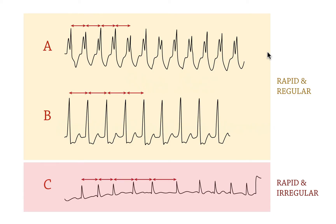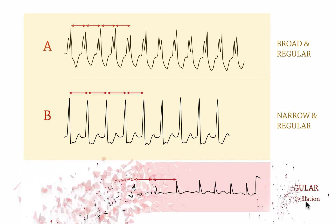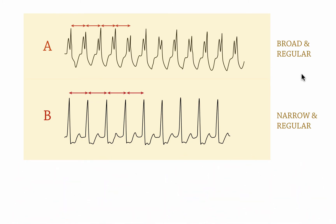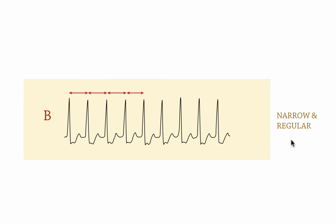This is a quick recap of what we already know. When we talked about tachycardias, we discriminated between rapid and regular, and rapid and irregular. We said that rapid and regular could come in two manifestations: broad and regular, and narrow and regular. If the rhythm was irregular, especially if the QRS complexes were narrow, we said that in most instances this was atrial fibrillation, or AF, but we're not going to talk about this today. We've already covered the broad and regular tachycardia, so we're also not going to talk about those either. So what we're left with are the narrow and regular tachycardias.